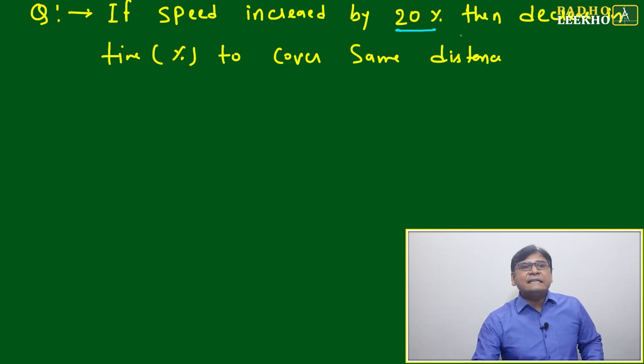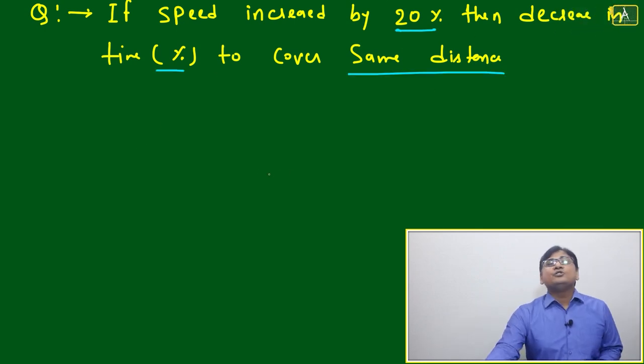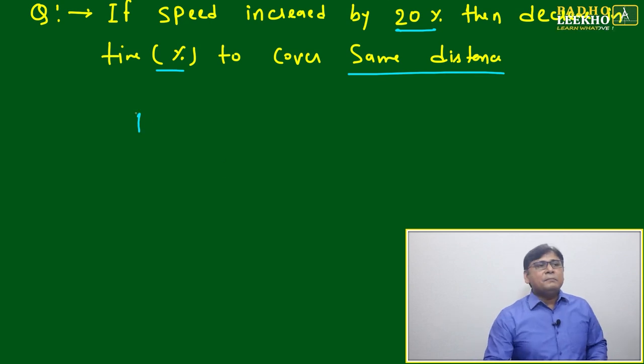The next question is: if speed is increased by 20%, then what is the decrease in time, given the condition that you have to cover the same distance? We know that distance equals speed into time: D = S × T.